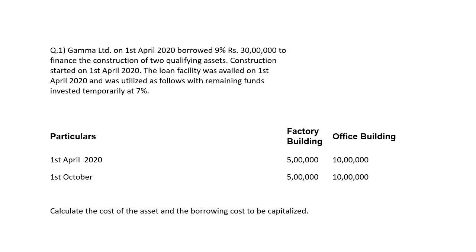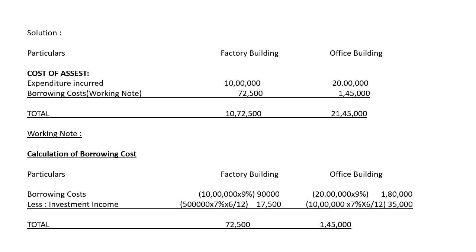Out of the 30 lakhs, factory building uses 10 lakhs and office building uses 20 lakhs. In the solution, you write the particulars — factory building expenditure incurred: 10 lakhs, office building expenditure incurred: 20 lakhs. For the working note on borrowing cost calculation: factory building borrowing cost = 10 lakhs × 9% = Rs. 90,000. Office building borrowing cost = 20 lakhs × 9% = Rs. 1,80,000. Then you deduct investment income.